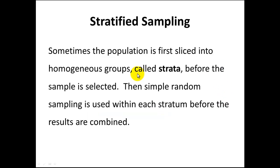Another way to sample is called stratified sampling. Sometimes we'll take the population and divide it into what's called a homogeneous group, or groups with similar characteristics. We call these groups strata, and then once the groups are selected, we perform a simple random sample within each stratum, or group, before the results are then combined together.